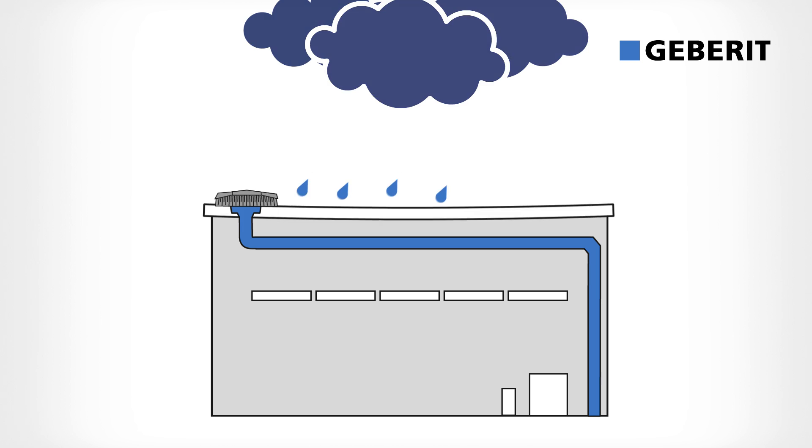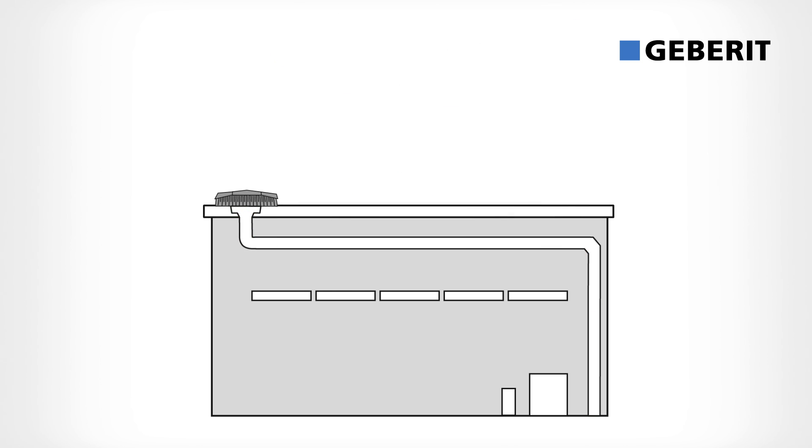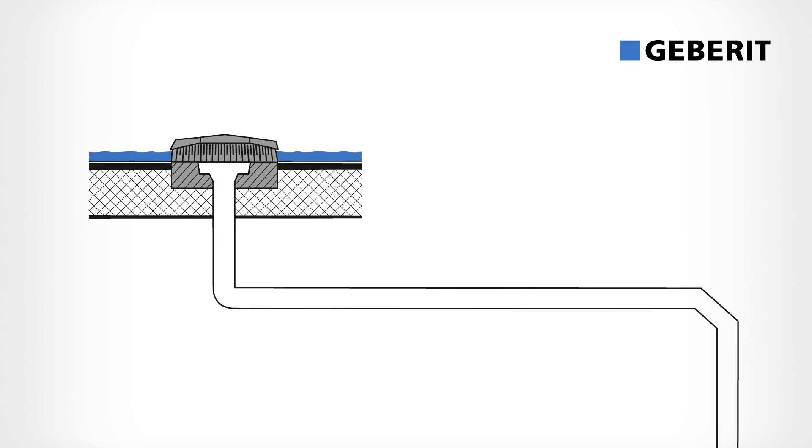Because roof drainage is important. This is how siphonic roof drainage works with Geberit Pluvia. Smaller pipe diameters, which fill completely in the event of heavy rain, result in a closed water column. The water is then suctioned off the roof with negative pressure.